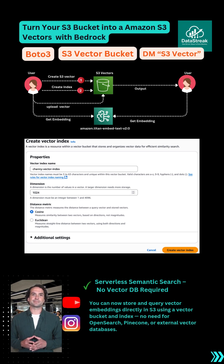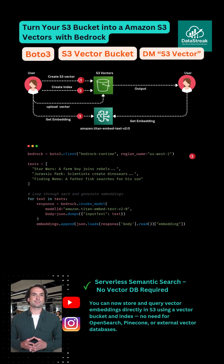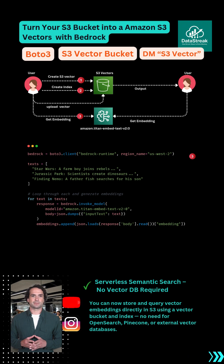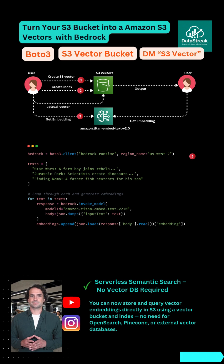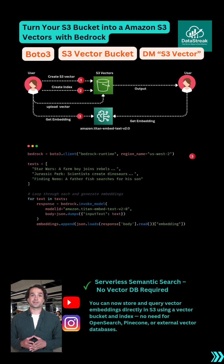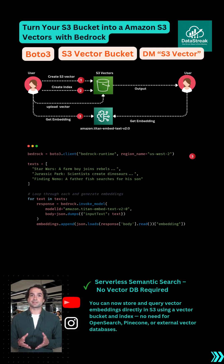Then we take our raw text, like these three movie summaries, and convert them into vectors using the Titan text embeddings V2 model. Titan returns 1024-dimensional vectors capturing the meaning of the text.